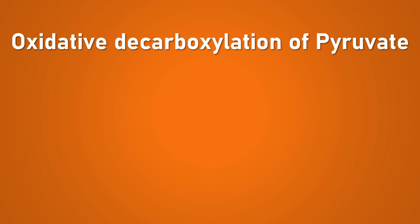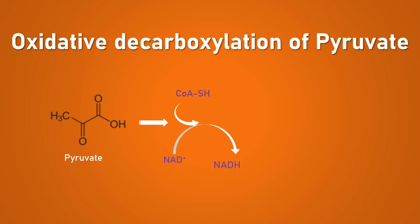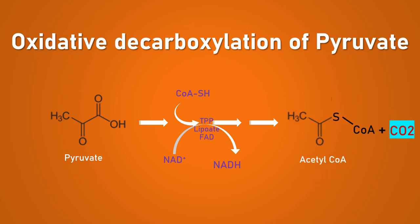The bridge reaction gets less attention than the rest of cellular respiration, but there is no way to get from glycolysis to the aerobic reactions without it. The reaction occurs in the mitochondria. Pyruvate molecules generated from glycolysis are transported into the mitochondria and converted into acetyl-CoA, with a molecule of carbon dioxide produced as metabolic waste, and NADH is also produced.